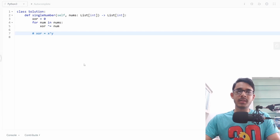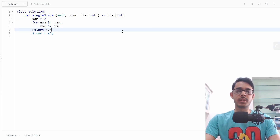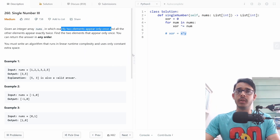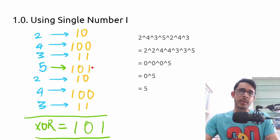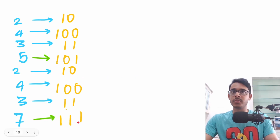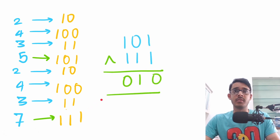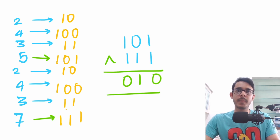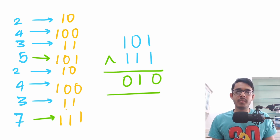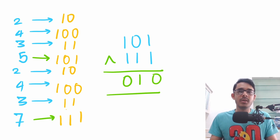I've implemented that part, and in Single Number I we could just return the XOR as the final answer. But things are not so simple here, because we know there are exactly two elements that appear only once. In the previous case we only had five appearing once, but now we have five appearing once and also seven appearing only once. In that case, XOR wouldn't be five or seven — XOR would be the XOR of five and seven, which is zero one zero. This is clearly not the answer and we can't return it directly. We need to somehow extract the information that five and seven came together to give this number.